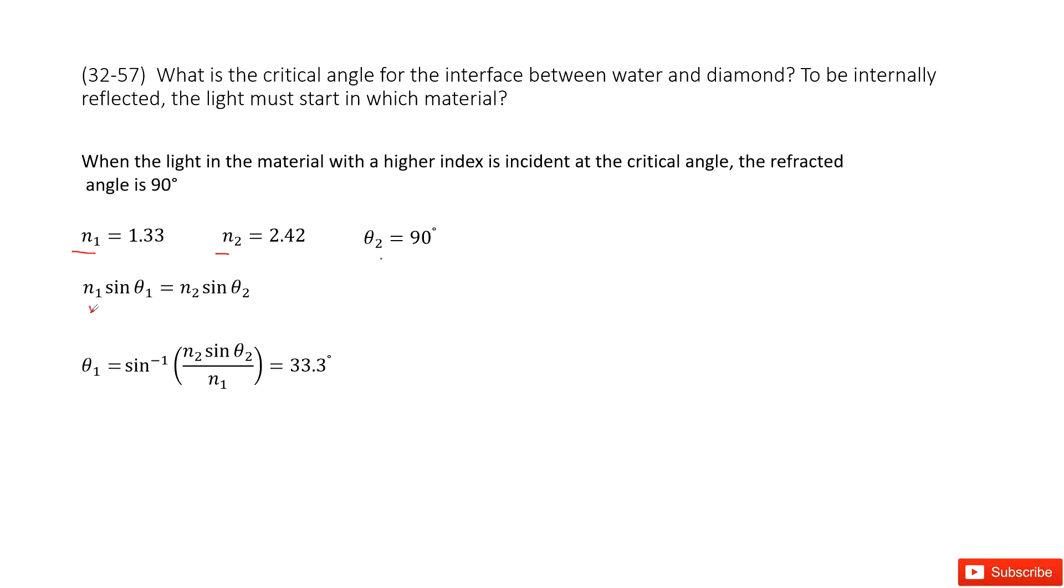Snell's equation tells you N1 sine theta 1 equals N2 sine theta 2. In this equation, N1 is given, theta 1 we don't know, N2 is given, and theta 2 is given.